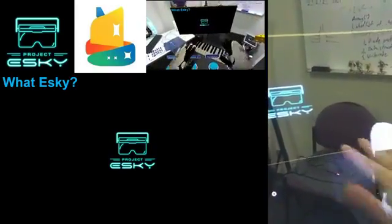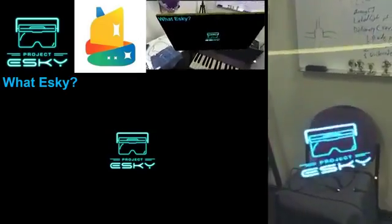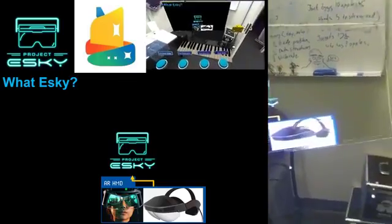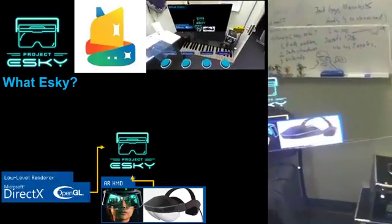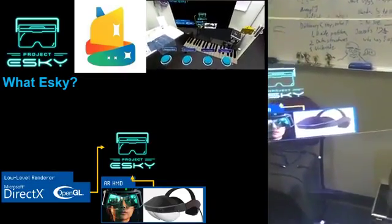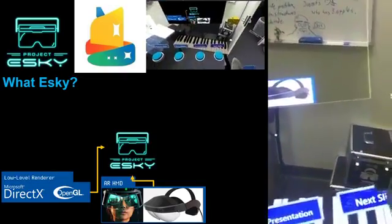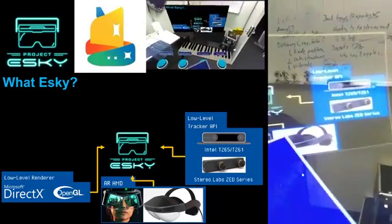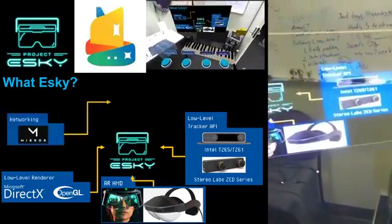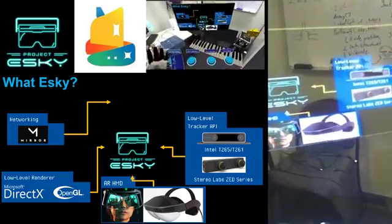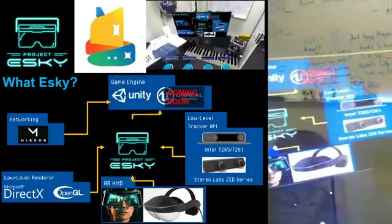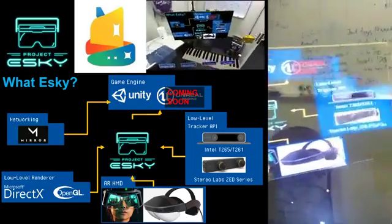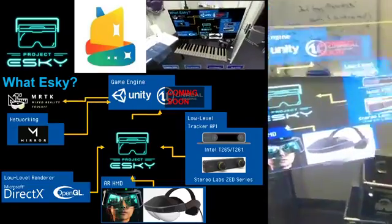So let's start with what is Esky. Simply put, Esky aims to combine any AR HMD that's tethered with a low-level renderer - a renderer that runs specifically outside of a game engine - along with a low-level tracker API. In my case the Stereo Labs ZED, but we also work with the Intel T265. This is combined with Mirror Networking to enable co-located experiences, all wrapped into a neat package consumed by either the Unity or Unreal game engine.